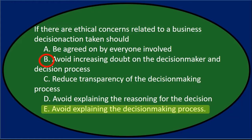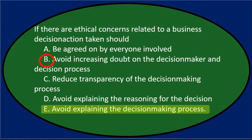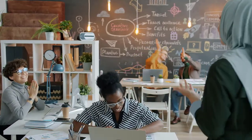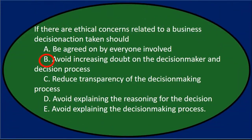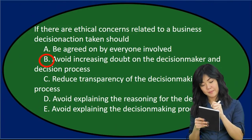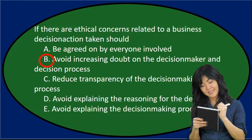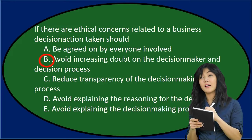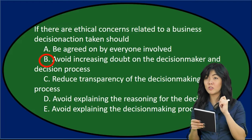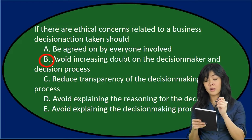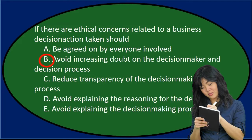E — avoid explaining the decision-making process — is wrong; we want to explain the process used to get to the decision. It doesn't mean everyone agrees, but explaining the process is important. Even if a good decision is made and people agree with it, if they weren't told about the process or don't think the process was fair, they won't be happy. Understanding and hopefully being involved in the process is all part of making everybody satisfied.